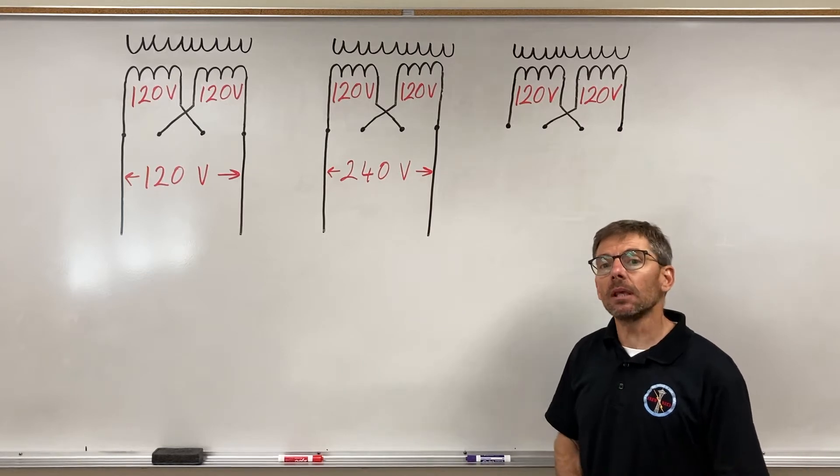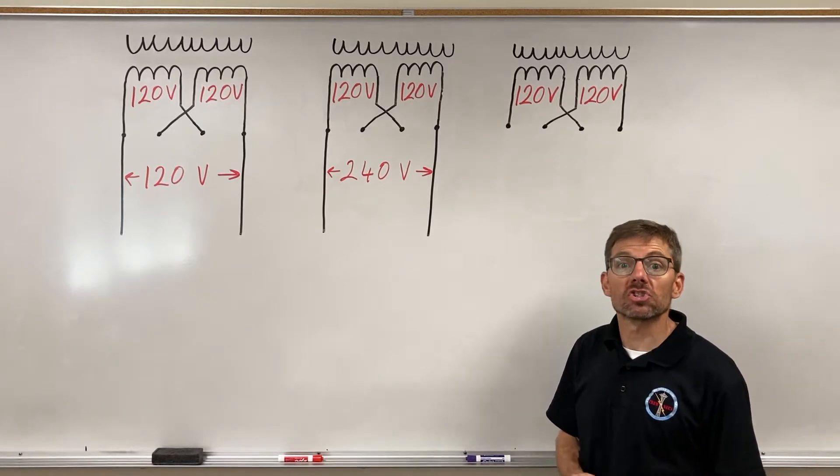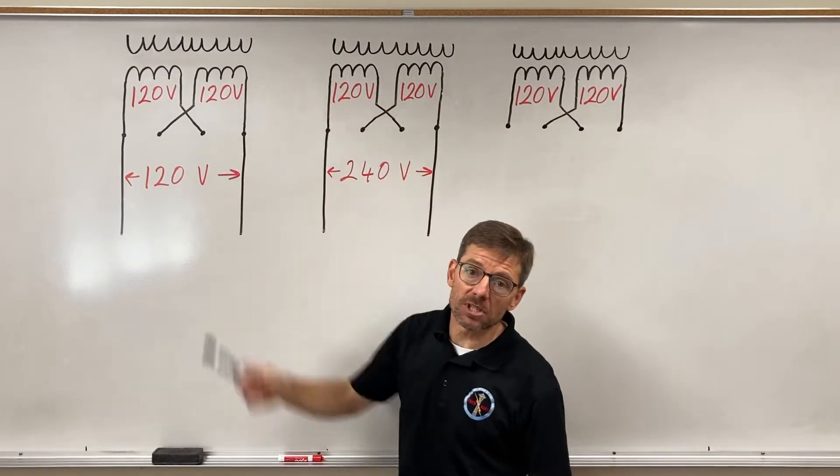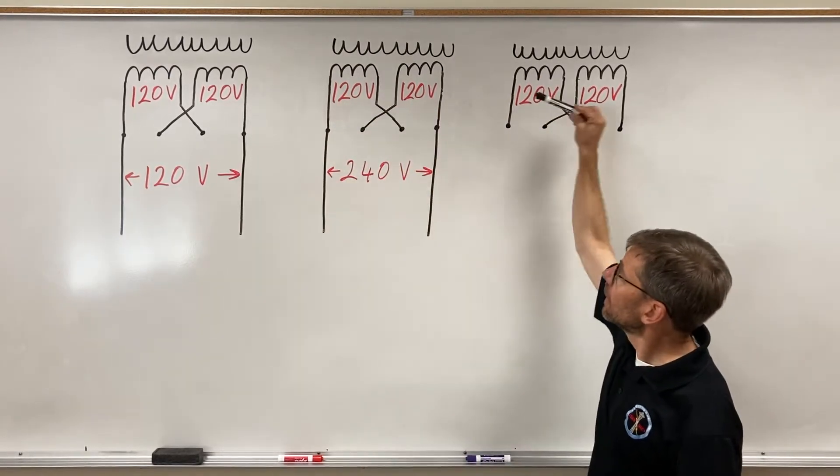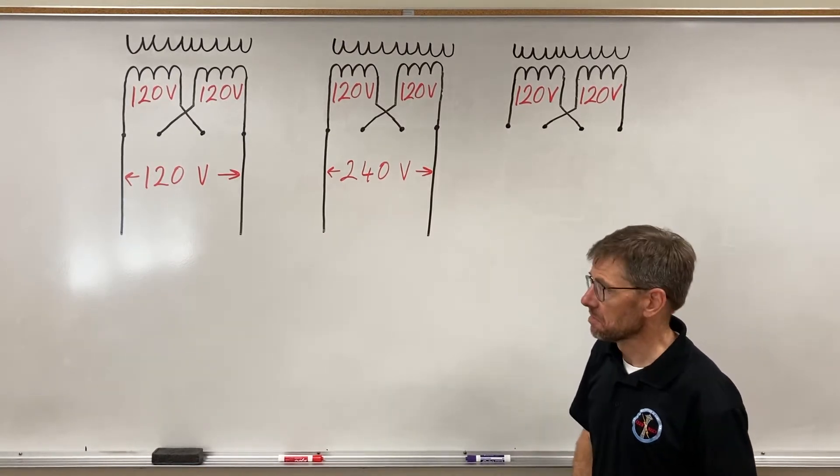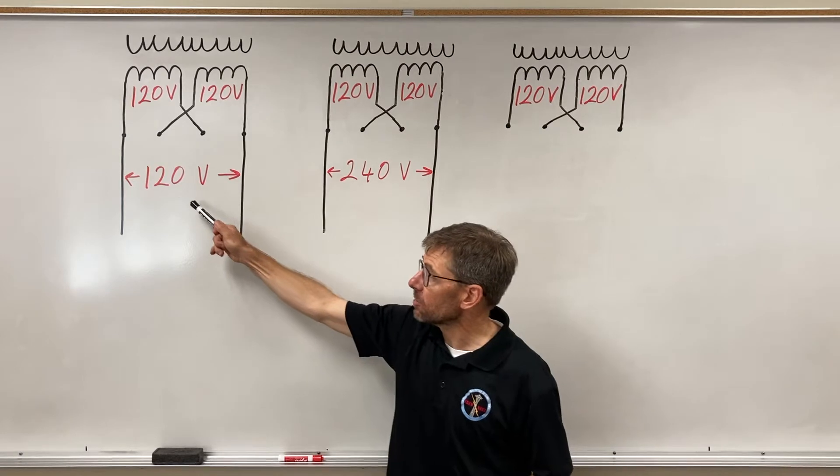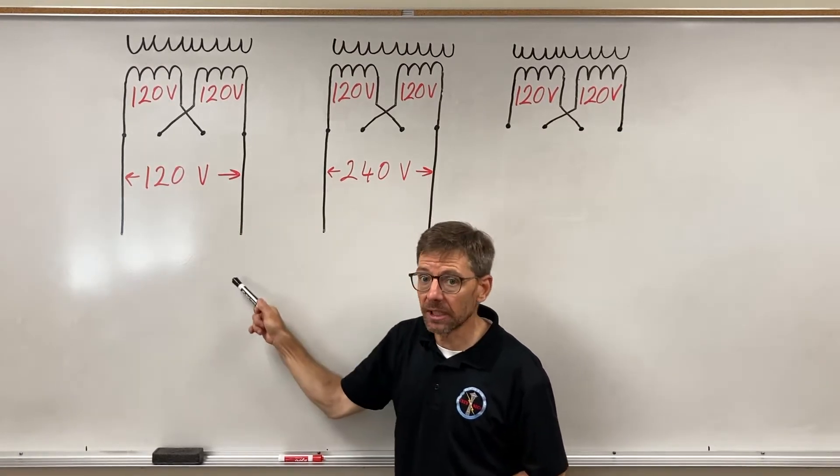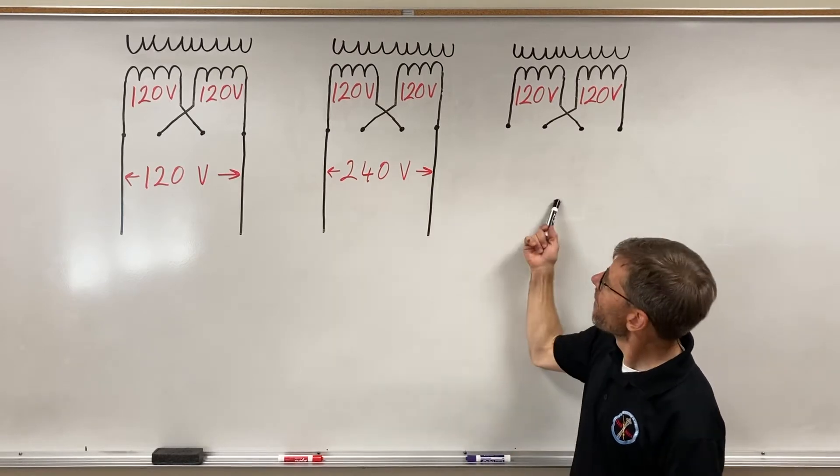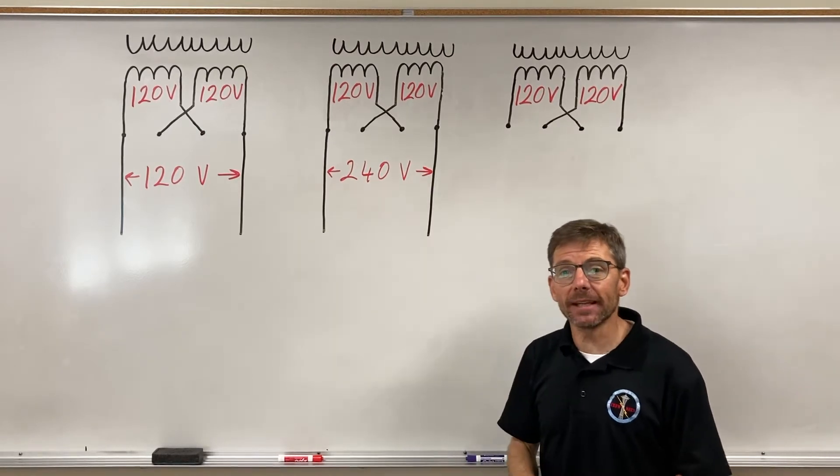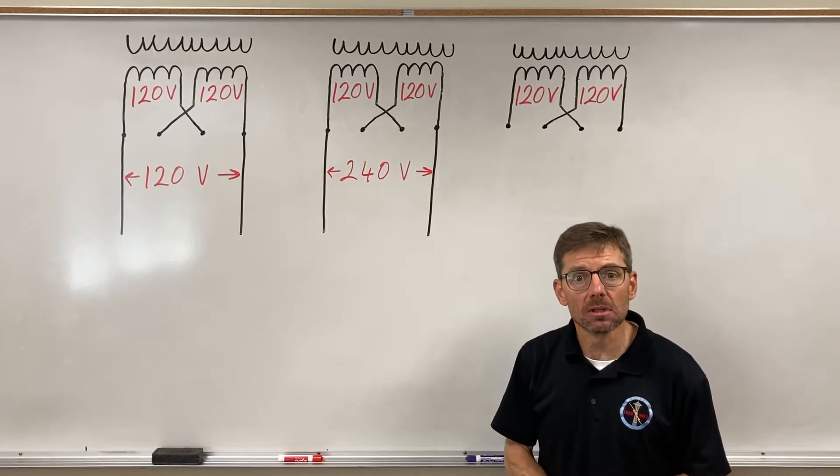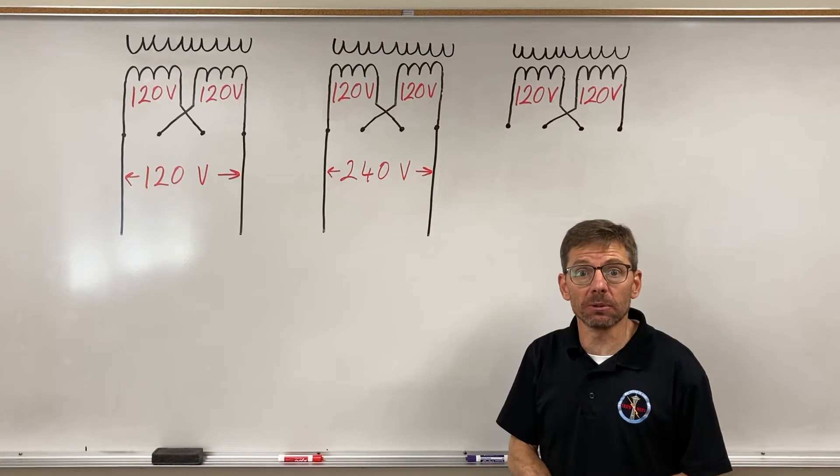So here I've set up three dual voltage secondaries. I'm less concerned with what's going on on the primary side. Just looking at the secondary and I'm trying to develop different outcomes. On the first one I want it to be 120 volts between the two leads. On the second one, 240. Then on the third one I'm going to try and get 120 and 240, see if I can get both options out of the same dual voltage transformer.